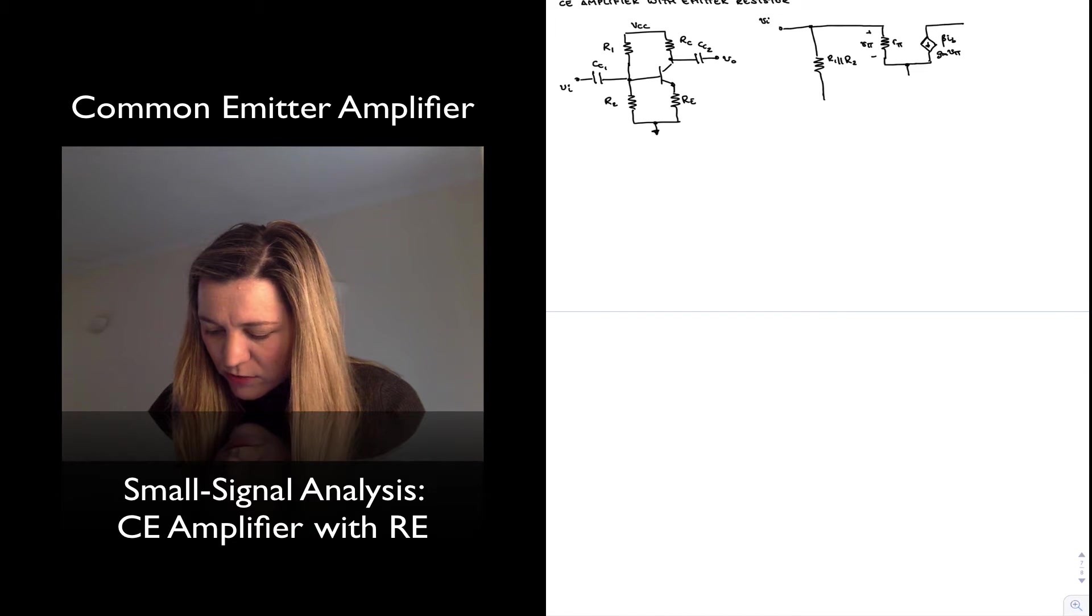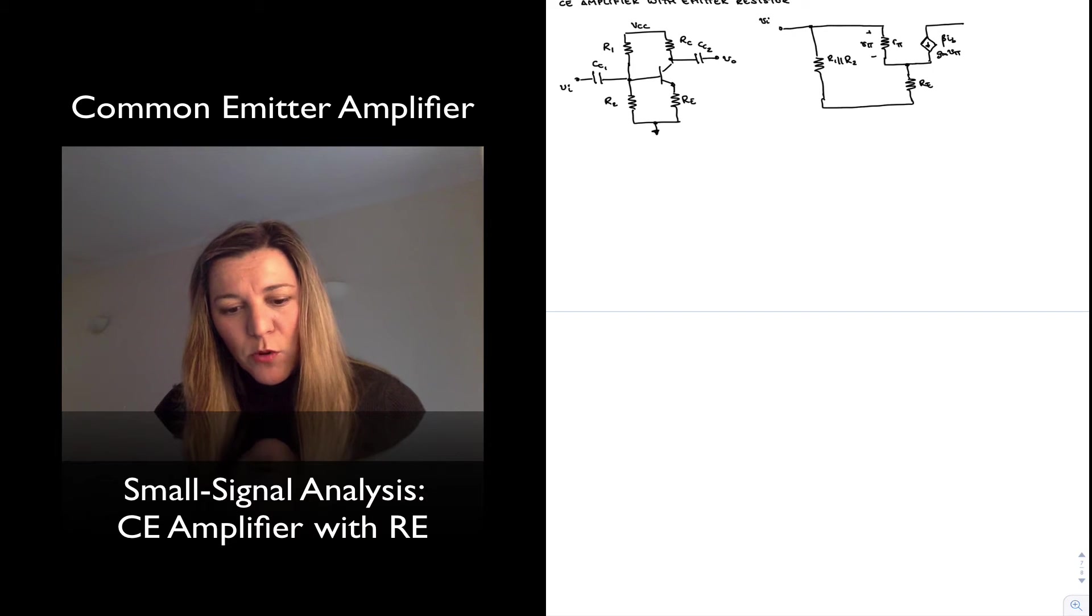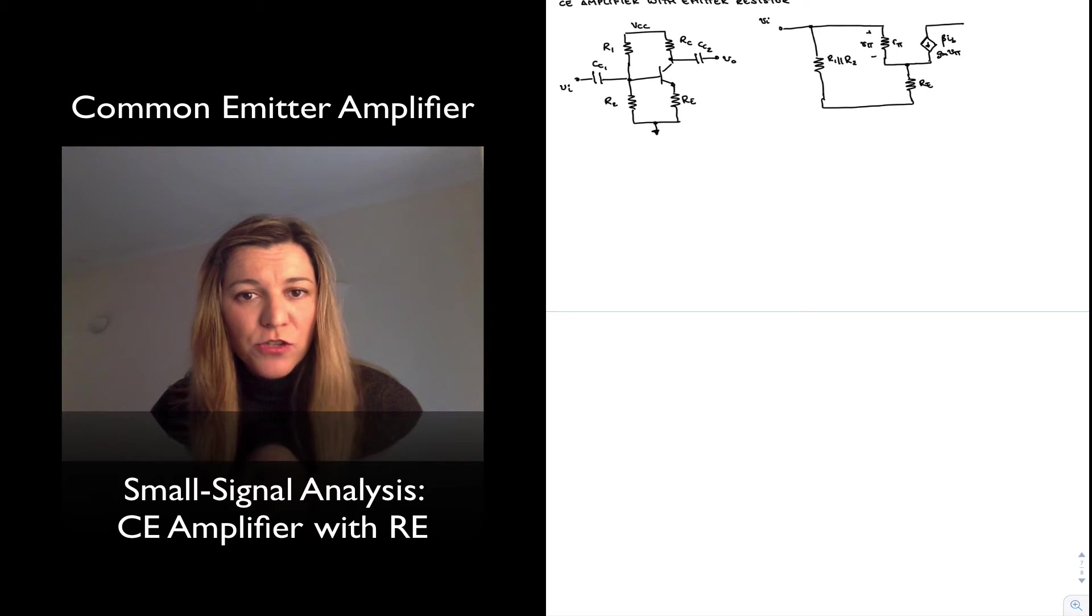Now I have an emitter resistor connected to the emitter terminal which is going from the emitter to ground R_E, and for simplicity I'm going to ignore the output resistance of the transistor, and that's going to just simplify my analysis.